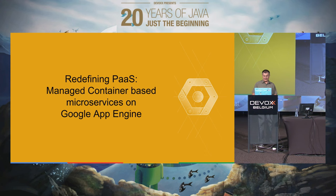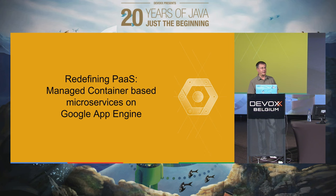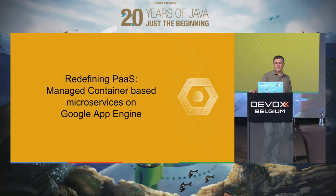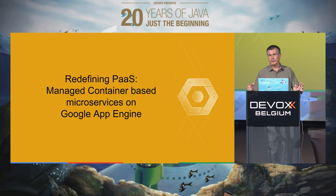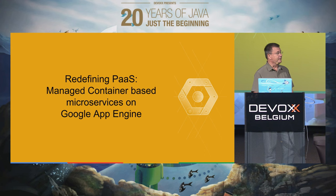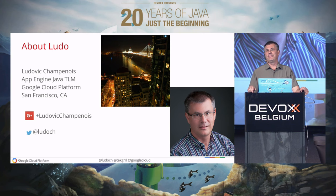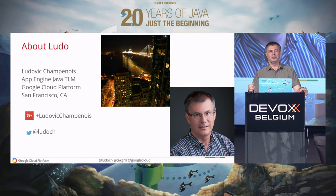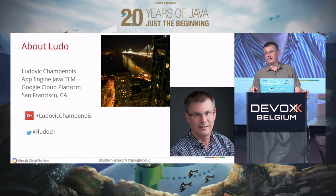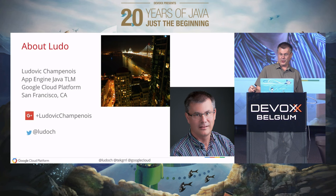Good morning. It's 10 minutes before noon, so it's still the morning. Thank you for staying that long. This is the last session of a very successful week at DevOps. We're going to talk about the Google Cloud Platform and how you can use it to deploy microservices. I'm Ludovic Champenois. I'm the TLM for Java App Engine — tech lead and manager — developing the App Engine Java Runtimes and SDKs. I'm located in SF; this is a view of my office next to the Bay Bridge.